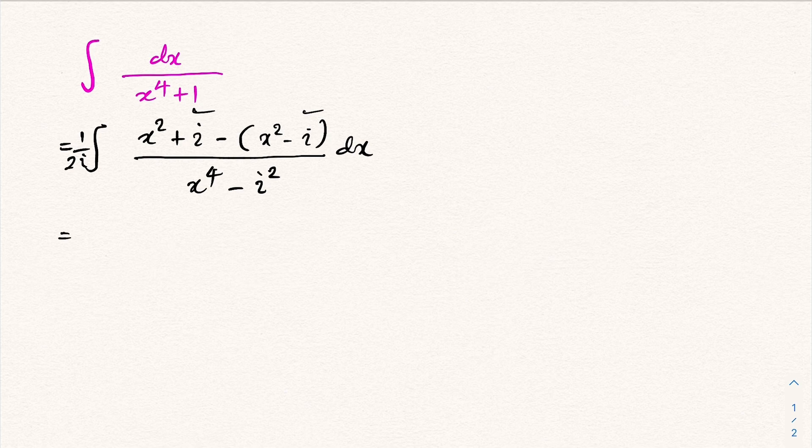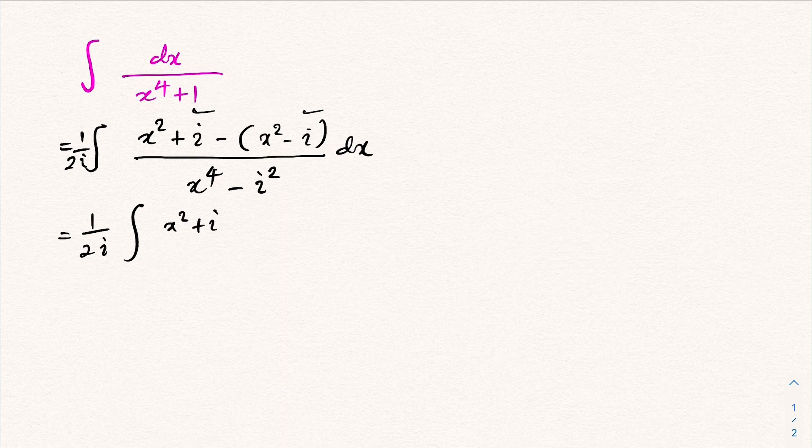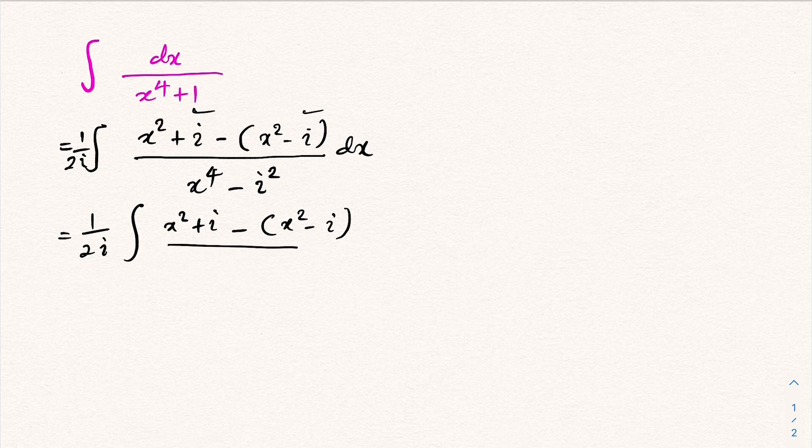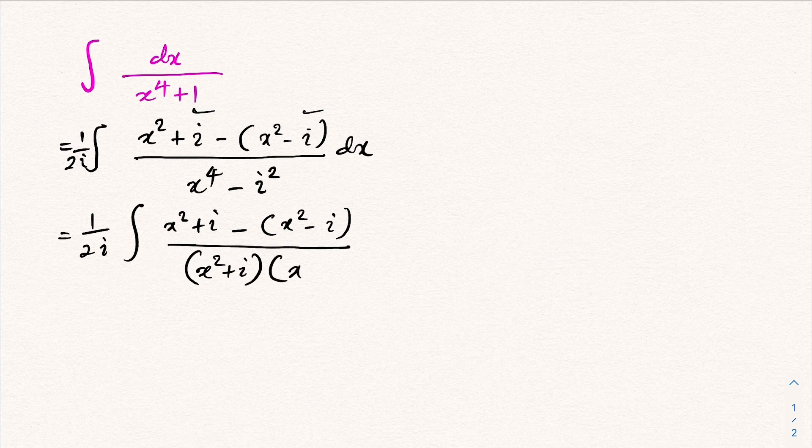Then one over 2i times x squared plus i minus x squared minus i over, now difference of two squares, so x squared plus i times x squared minus i dx.